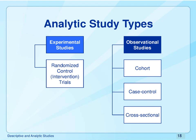In observational studies, investigators attempt to quantify an exposure that participants have already been exposed to. For example, if we want to study the association between cigarette smoking and lung cancer, we don't force people to smoke — that would be unethical. Instead, we find people who have chosen to smoke, who have intentionally exposed themselves to the independent variable, and we study those individuals to determine whether that exposure ultimately leads to cancer as the dependent variable. There are three types of observational studies: cohort, case-control, and cross-sectional.